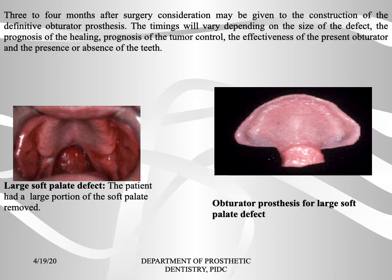Three to four months after surgery, consideration may be given to the construction of a definitive obturator prosthesis. The timing will vary depending on the size of the defect, the prognosis of healing, prognosis of tumor control, the effectiveness of the present obturator, and the presence or absence of teeth. The picture on the left shows a large soft palate defect after surgery, and the picture on the right shows an obturator prosthesis for the same defect.